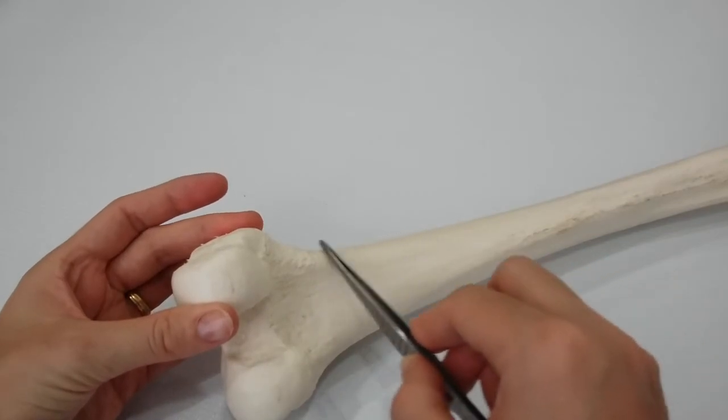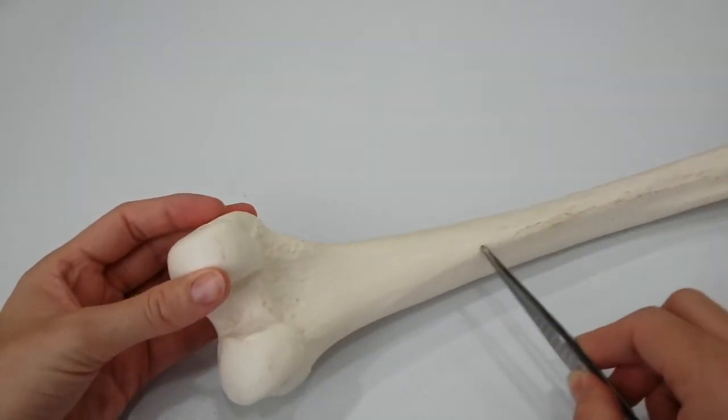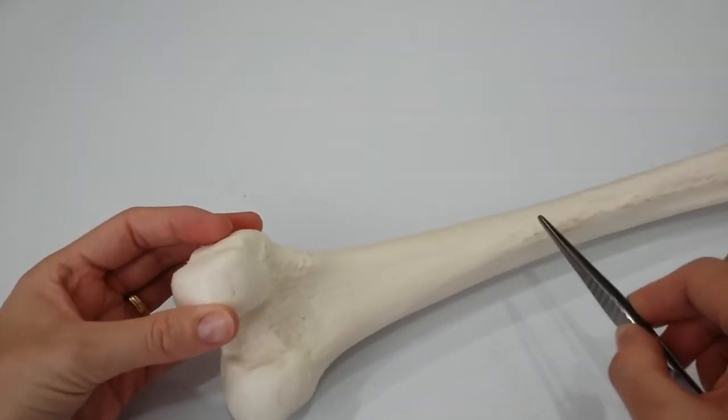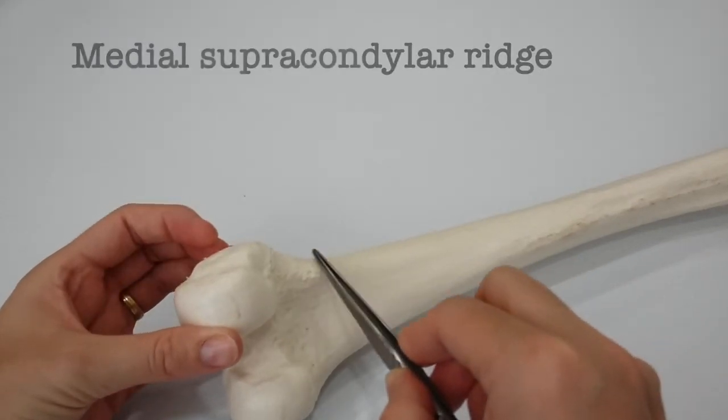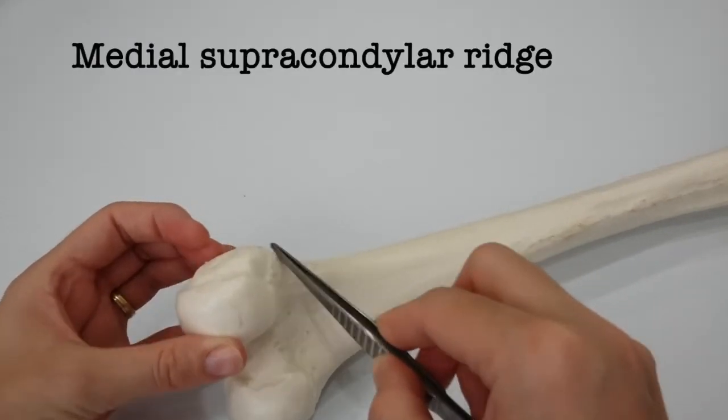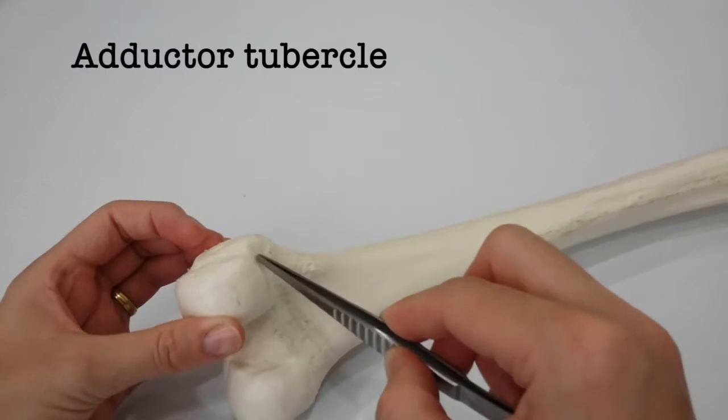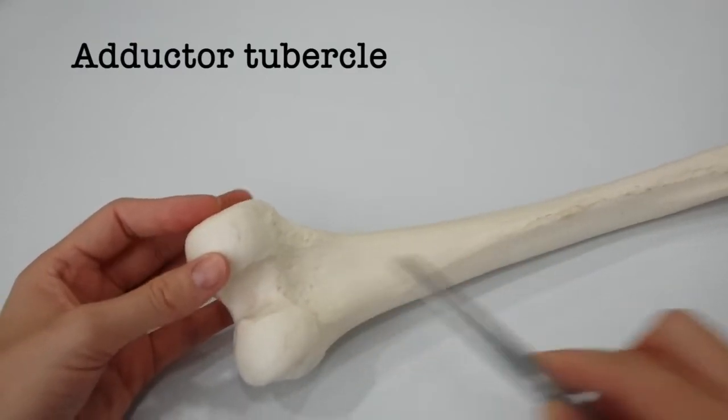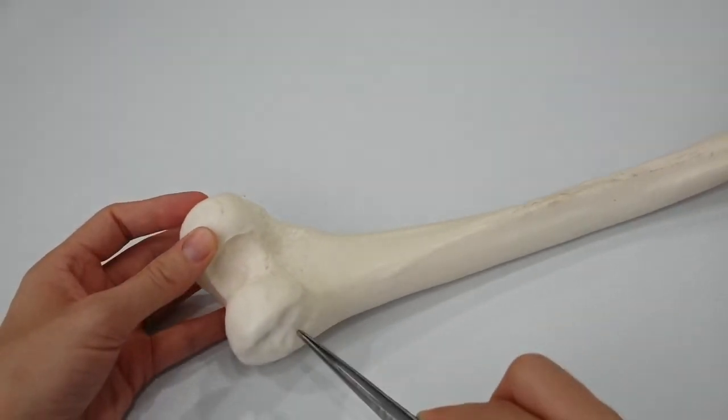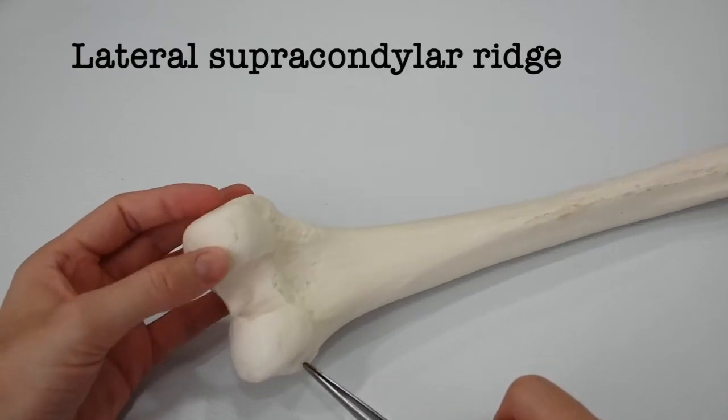The margins of the linea aspera diverge above and below. The medial margin continues below as the medial supracondylar ridge to the adductor tubercle on the medial condyle. The lateral margin becomes continuous below with the lateral supracondylar ridge.